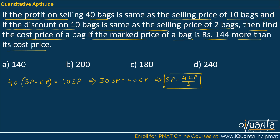Since we have to find out the cost price in the end, we'll substitute every value in terms of cost price. Now we're given that the discount on 10 bags — and we always provide discount on mark price, so discount is mark price minus selling price. When you provide some discount on the mark price it becomes the selling price. So discount on 10 bags, multiplied by 10, equals the selling price of 2 bags, giving us 2 SP. Solving this, we get 10 MP equal to 12 SP.